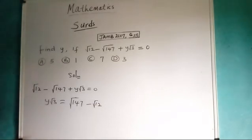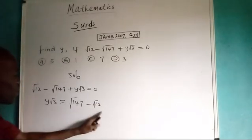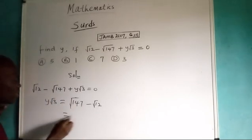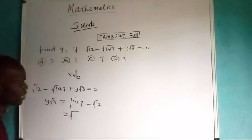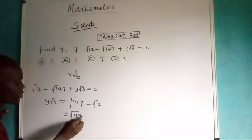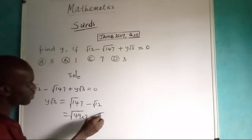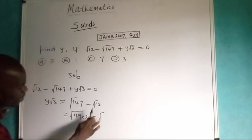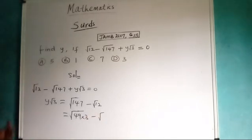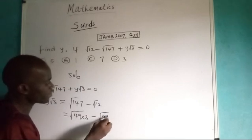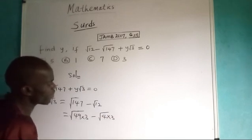Now in this very case I need to reduce this to a lower surd. For the one of 147, I need to break it down. We have 49 times 3. Use your calculator and you will understand what I am talking about. Multiply 49 and 3 and you will have 147. For the one of 12, multiply 4 and 3, you will have 12.